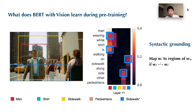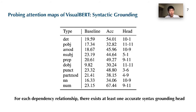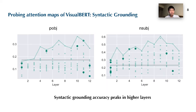More formally, if two words — word 1 and word 2 — are linked through a dependency relationship R, we check if word 1 is attending to the regions of word 2. In this table, we list the most frequent dependency relationships and the most accurate attention head for identifying each relationship. We find that attention heads are good at predicting syntactic relations between words and image regions, exceeding a baseline of always guessing the most confidently detected region. Further, different attention heads specialize in different relations, which is consistent with the behavior found in the attention heads of BERT. We also plot the syntactic grounding accuracy of two dependency relationships across all attention heads, and observe a similar trend: accuracy peaks in higher layers.